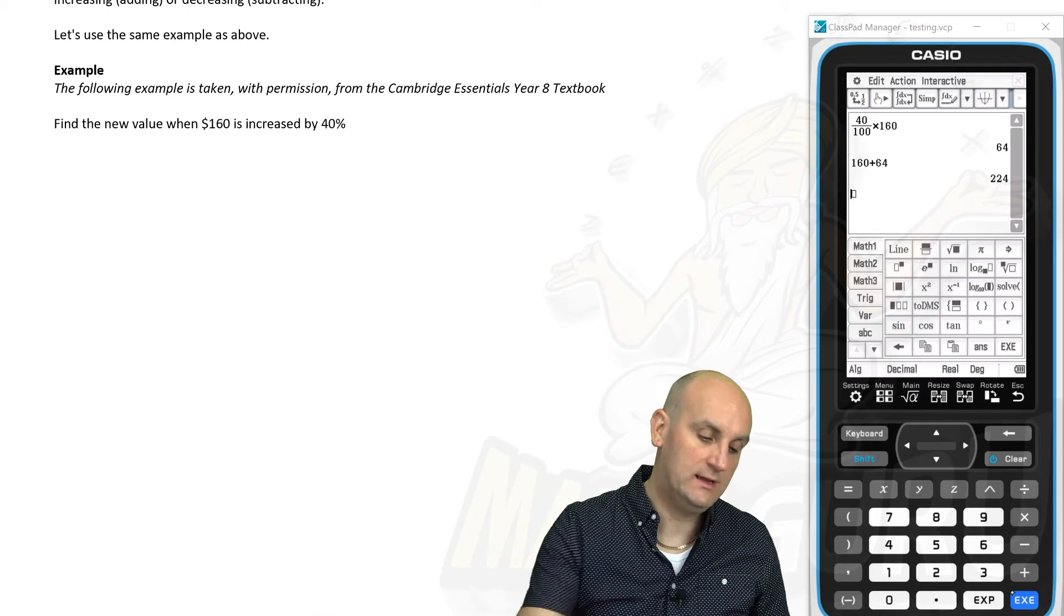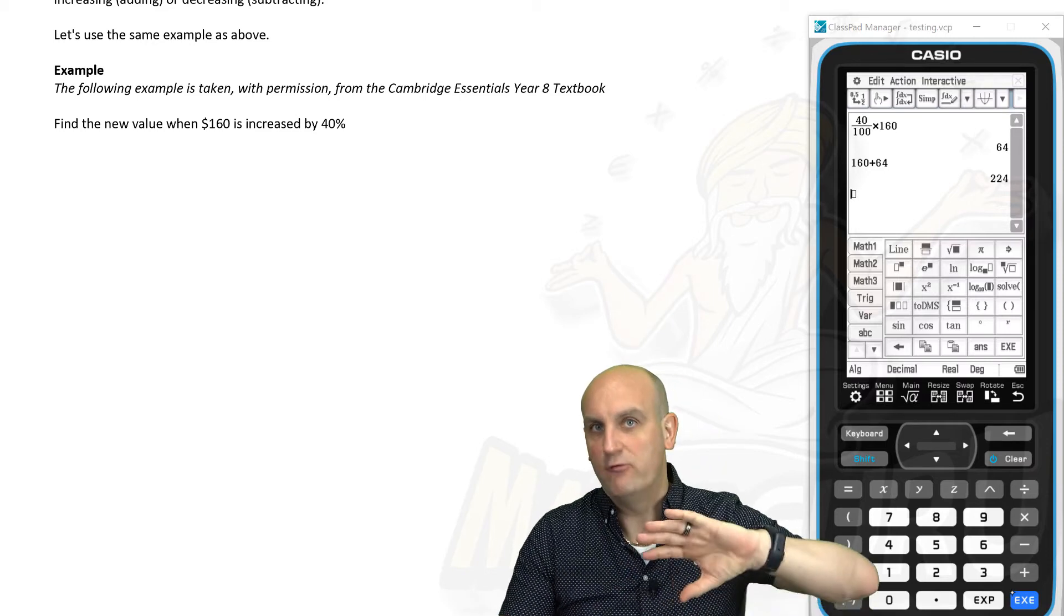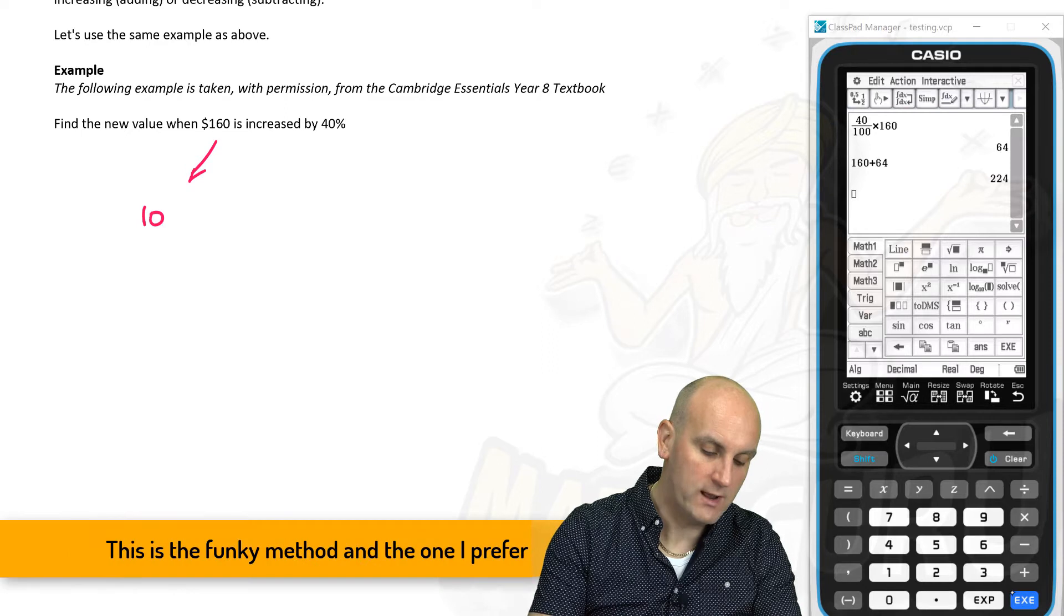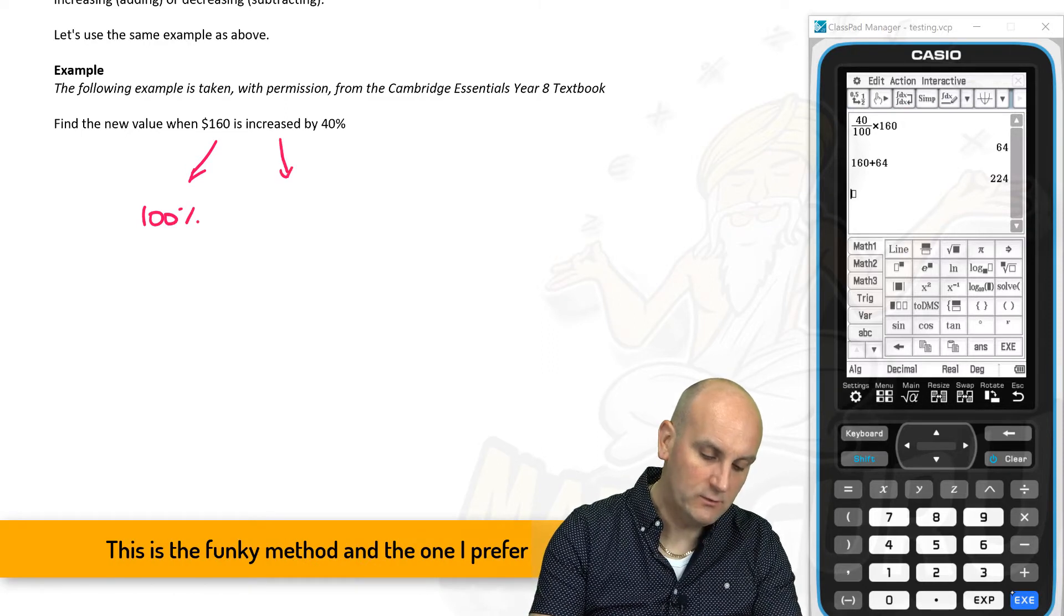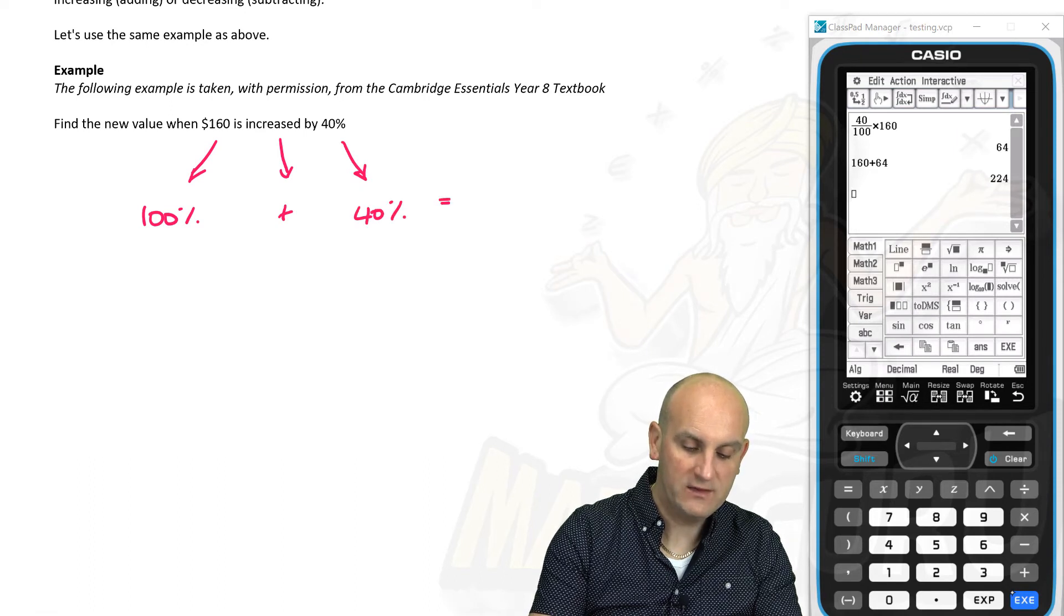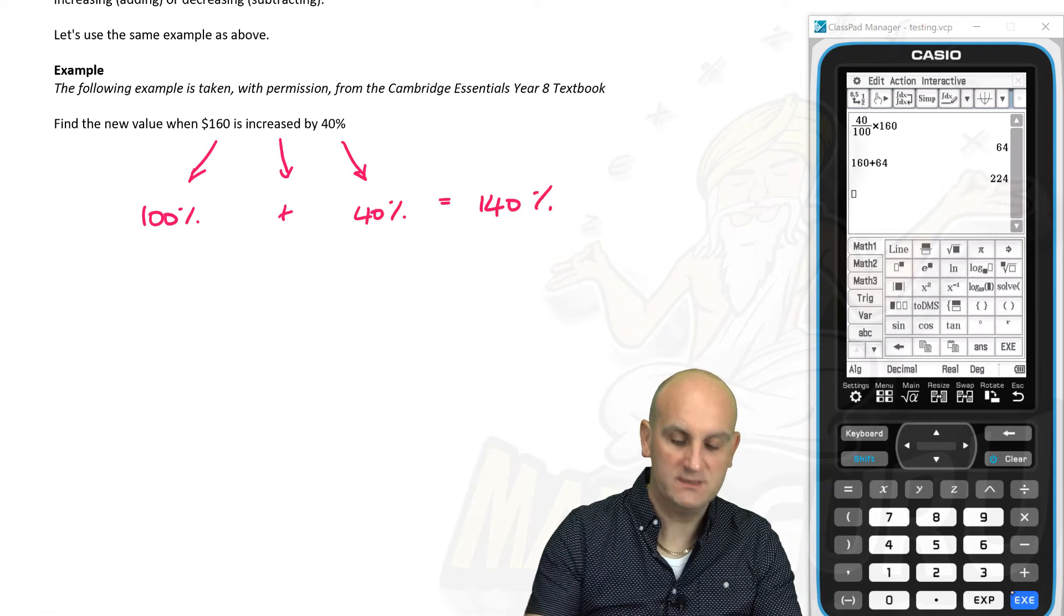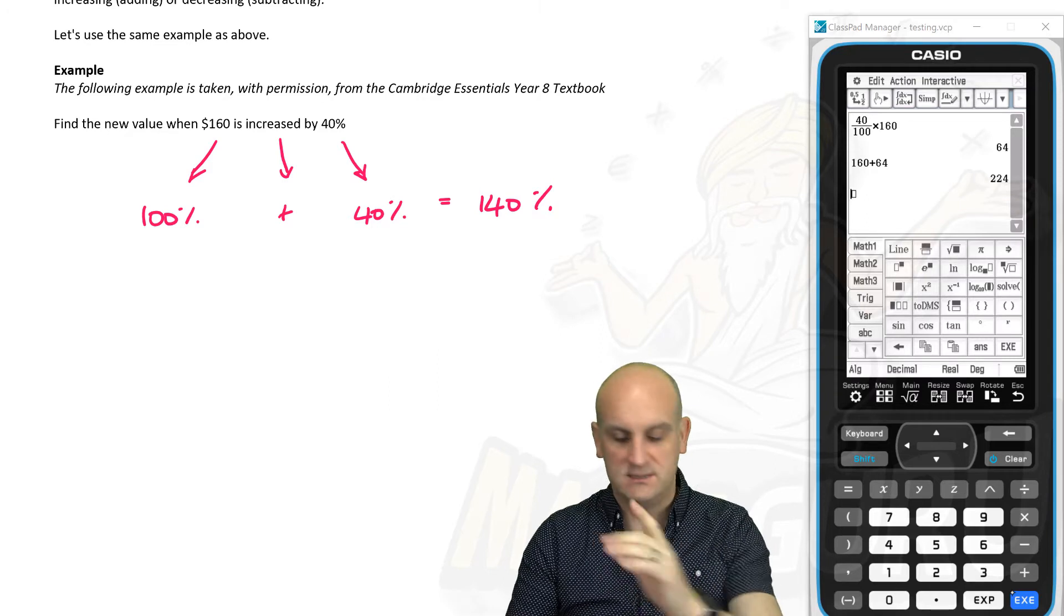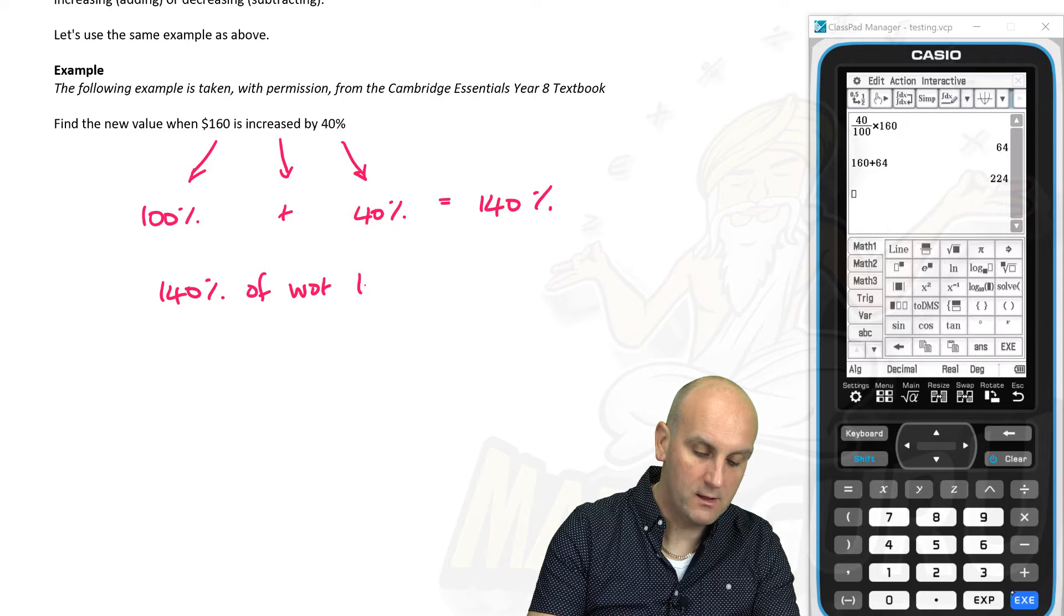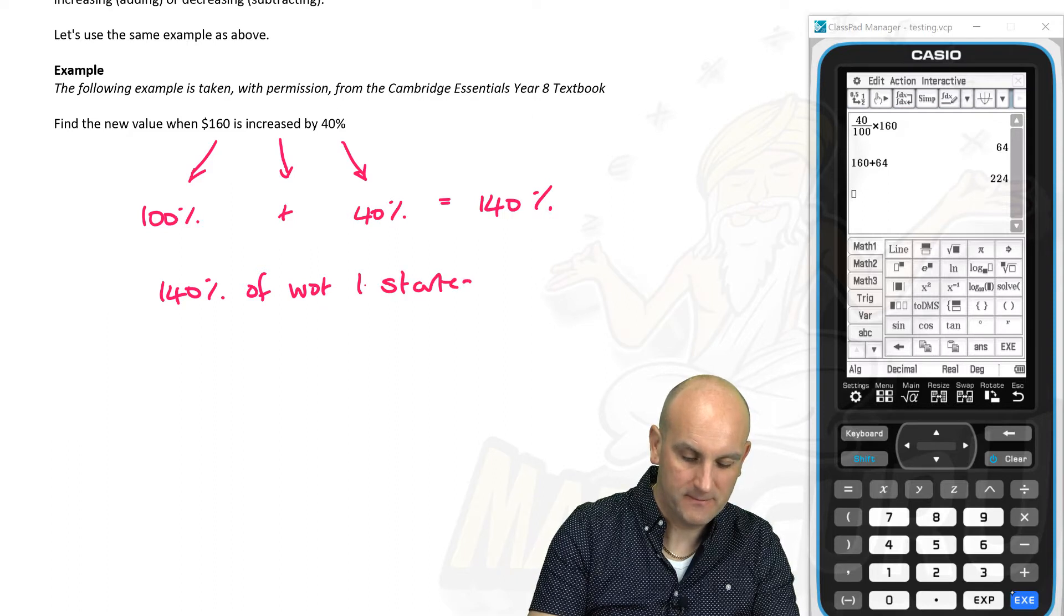And ladies and gentlemen, that's very much what I'm going to do here now. Because what I'm going to say is, let's reverse that a little bit. This $160 is 100%. But I'm increasing, which means I'm adding 40%.